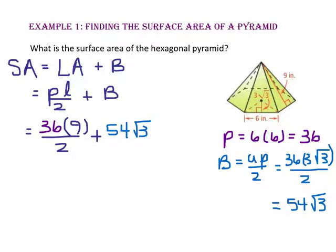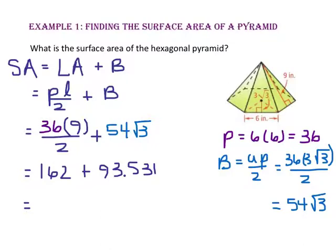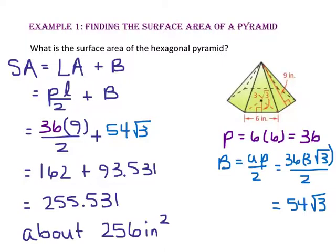The lateral area — 36 times 9 divided by 2 — is 162 square inches. Plus the area of the base, which is approximately 93.531, gives us a surface area of 255.531. So the surface area of the hexagonal pyramid is approximately 256 square inches.